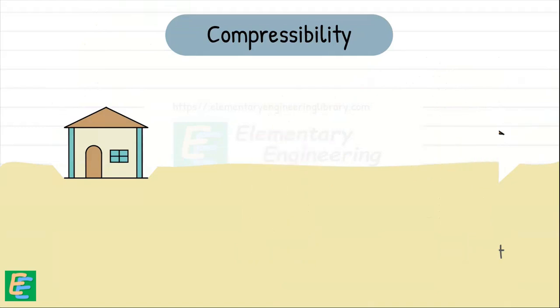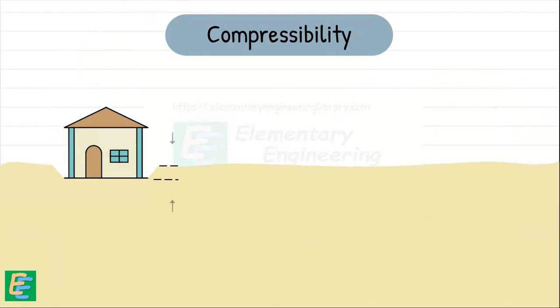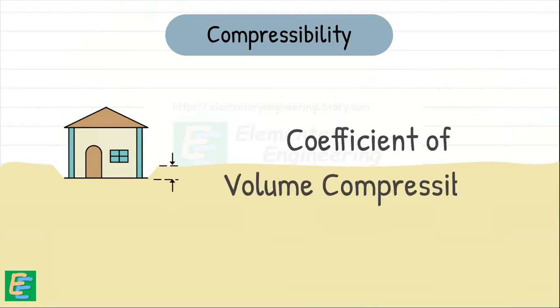To quantify and predict the compressibility of soils, engineers rely on an important factor called coefficient of volume compressibility, denoted as MV.